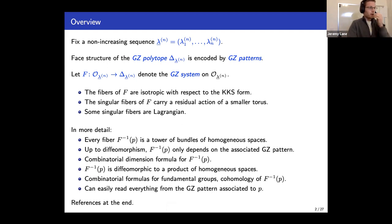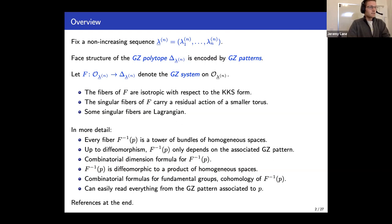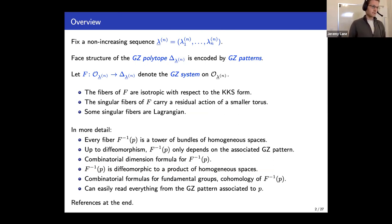All fibers of this map are actually isotropic with respect to the symplectic form. The singular fibers are not smooth manifolds a priori, but they're quite nice — they carry a residual action of some smaller torus, and some of them are even Lagrangian even though they're not tori. These are all very interesting features for an integrable system, and this is an important family of examples to study if you're interested in integrable systems and their singular fibers.